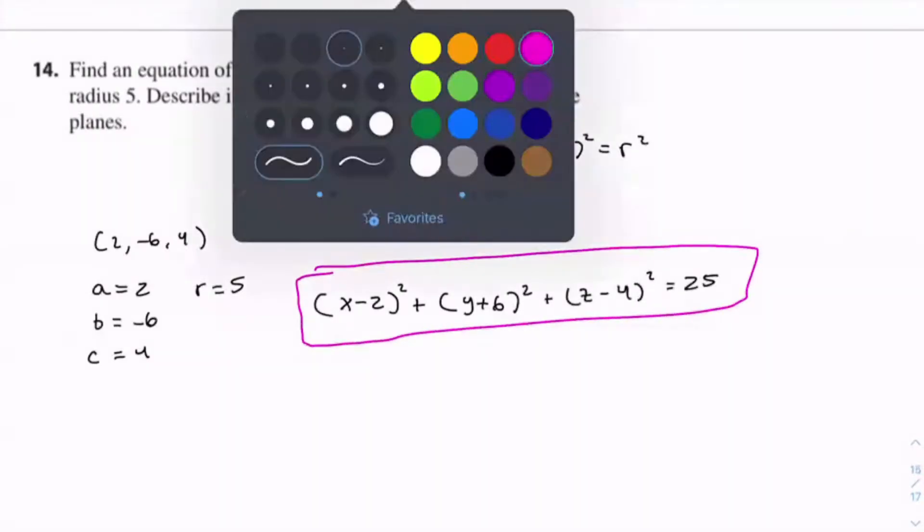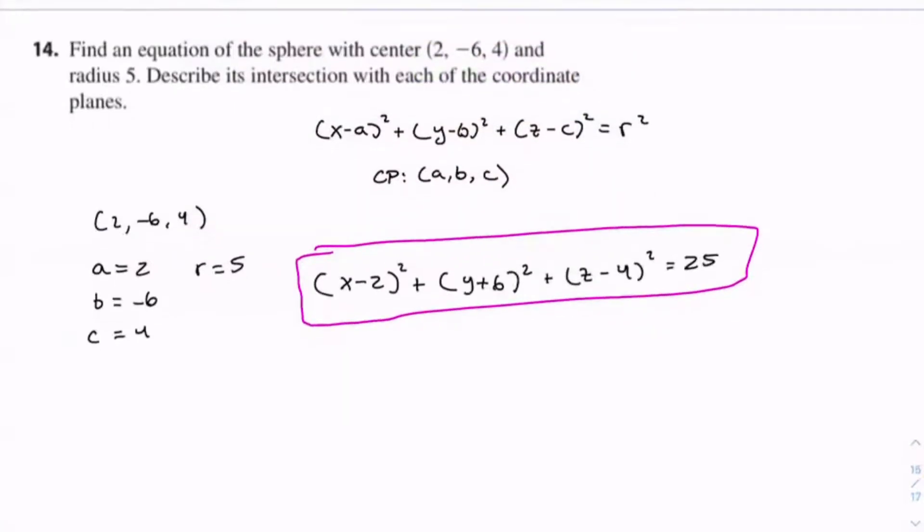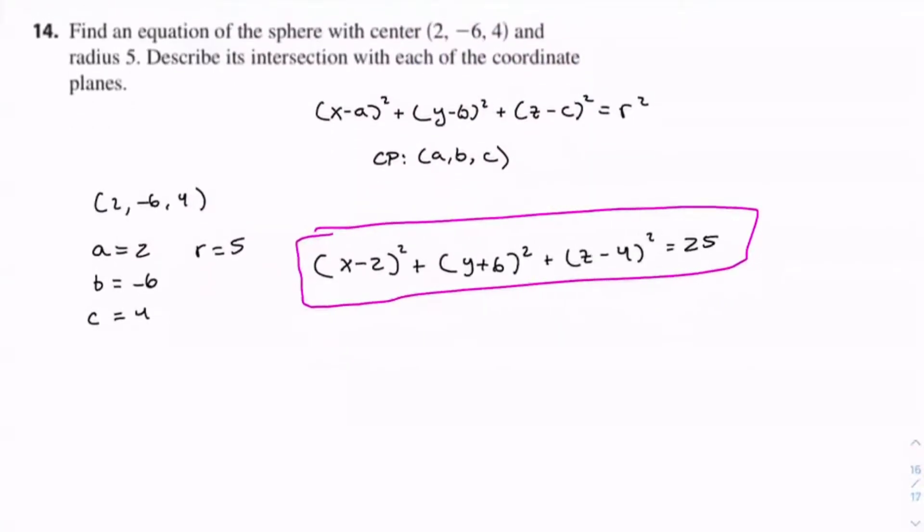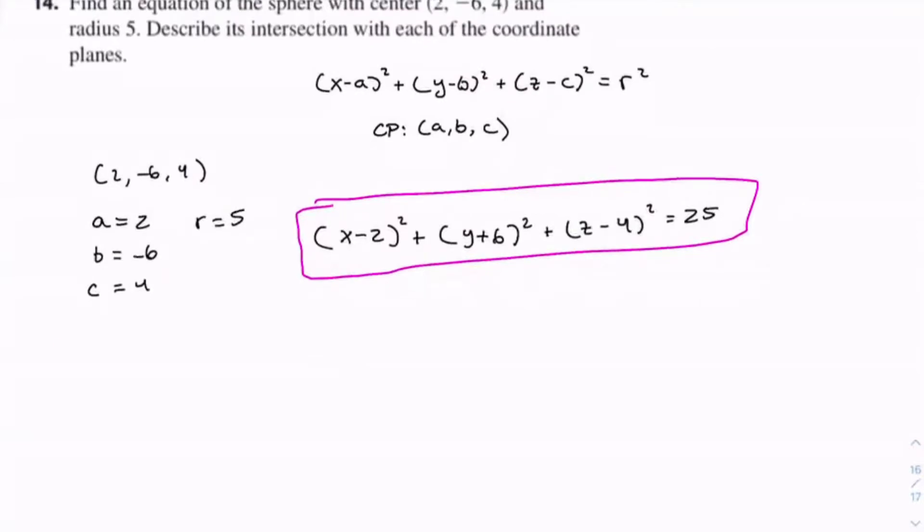So now, we need to find what happens when it intersects with each of the coordinate planes. Let's first start with the xy-plane. This means that z equals 0. And all we have to do for the intersection is plug z equals 0 into this formula.